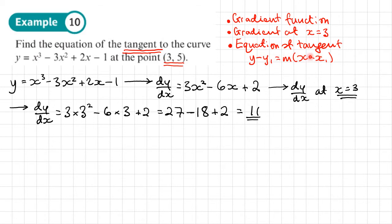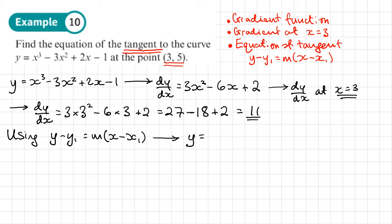We can now find the equation of the tangent using y minus y1 equals m times x minus x1. Our y1 is 5 and x1 is 3, so we get y minus 5 equals 11 times x minus 3. That is the equation of the tangent and we can leave it in that form. That's the final answer, but we can also expand and write it in the form y equals mx plus c.